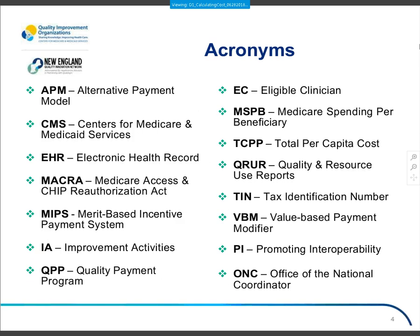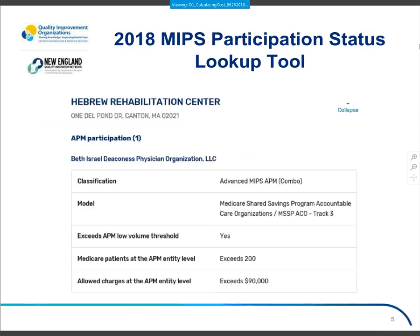Acronyms you'll hear: QPP is the Quality Payment Program. MSPB is Medicare Spending Per Beneficiary. TPCC is the Total Per Capita Cost. And we'll also talk about QRURs, which are the Quality and Resource Use Reports.